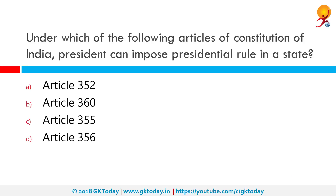Under which of the following articles of the Constitution of India can the President impose presidential rule in a state? Under Article 356 of the Constitution of India, in the event that a state government is unable to function according to constitutional provisions, the central government can take direct control of the state machinery.